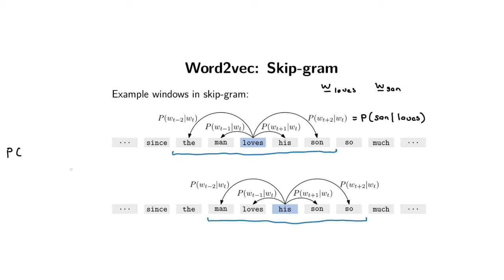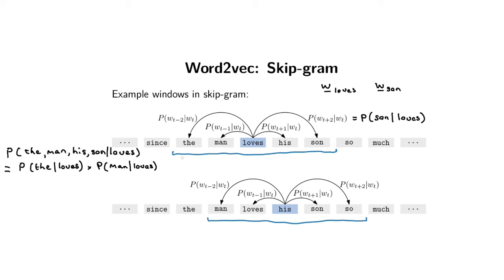The second assumption — also a bit wrong — is that within each window, each context word is conditionally independent given the center word. For the window around 'loves,' we're modeling the probability of 'the,' 'man,' 'his,' and 'son' given the center word 'loves.' Skipgram says each of these probabilities can be treated separately and multiplied together: P(the|loves) × P(man|loves) × P(his|loves) × P(son|loves).